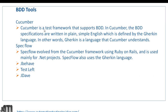Different BDD tools are available in the market. Cucumber is the most important — it supports BDD with specifications written in plain English defined by Gherkin language, which is the language Cucumber understands. Other available tools include SpecFlow, JBehave, and TestLeft. We are going to use Cucumber to implement the BDD framework.